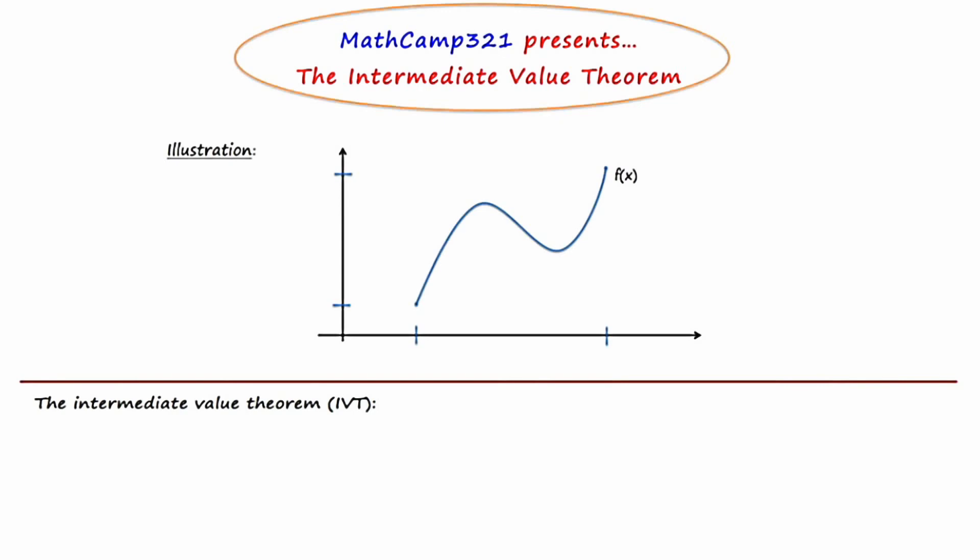Before I actually write down the Intermediate Value Theorem, I'm going to show you what it is by way of an illustration. Let's consider a function f of x on a closed interval a,b. If the point to the left is a and we plug it into the function f of x, then the height of that point will be known as f of a. Now if we jump to the right hand side of the interval b and we plug b into the function f of x, then the height of that point will be f of b. In order for the Intermediate Value Theorem to work, the function has to be continuous on this closed interval from a to b.